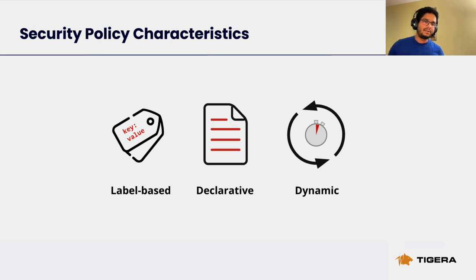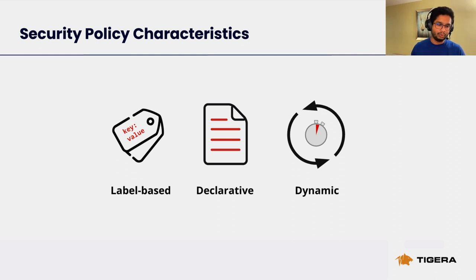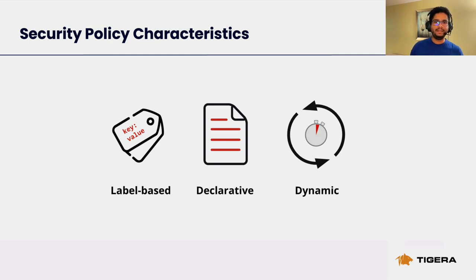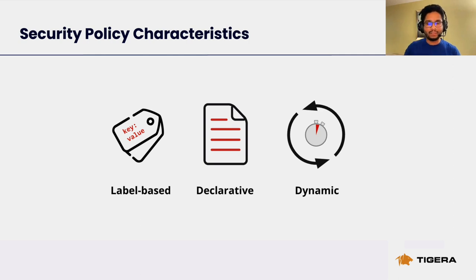Moving on, let's look at the characteristics of security policies. Security policies are label-based, and the key-value pairs are the primary selectors to scope policies and refer to source and destination endpoints. The policies are declarative — Calico offers a very flexible declarative policy language, and the underlying implementation of the policy is abstracted from the user. The underlying implementation being the data planes — for example, eBPF, IPTables, or Windows HNS — that is abstracted from the user.